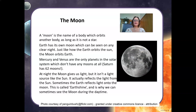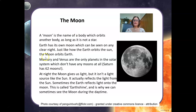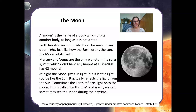The moon is the name of a body which orbits another body, as long as it is not a star. Earth has its own moon, which can be seen on any clear night. Just like the Earth orbits the Sun, the moon orbits Earth. Mercury and Venus are the only planets in the solar system which don't have moons at all. Saturn has 62 moons. At night, the moon gives us light, but it isn't a light source like the Sun — it actually reflects the light from the Sun. Sometimes the Earth reflects light onto the moon, and this is called Earthshine, which is why we can sometimes see the moon during the daytime.